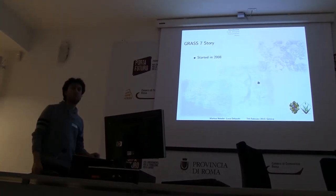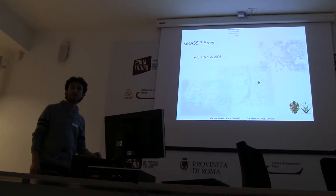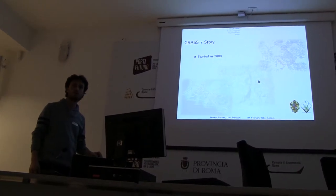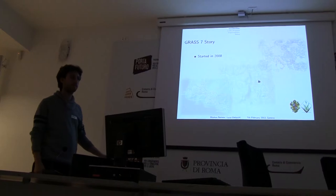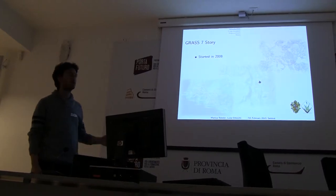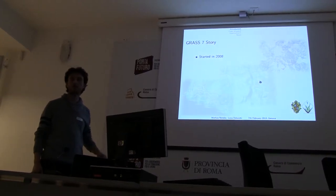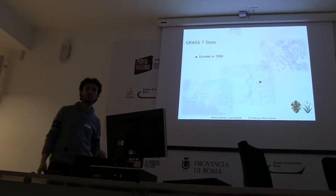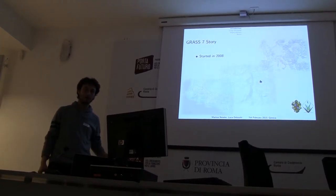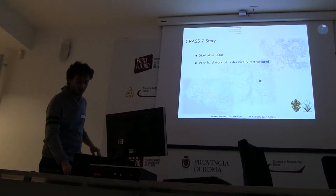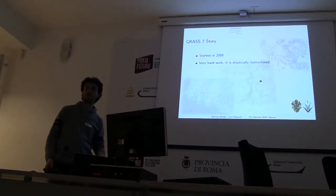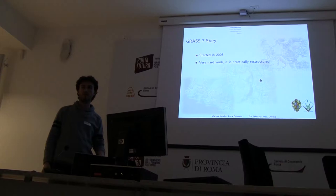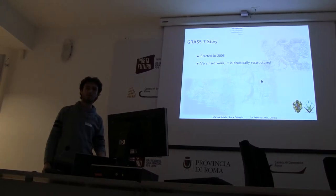A brief story about GRASS 7: it started to be developed in 2008. GRASS 6 was released, and the trunk version was moved to version 7. There has been very hard work — it took at least 5 years, and there is still no stable version of GRASS 7.